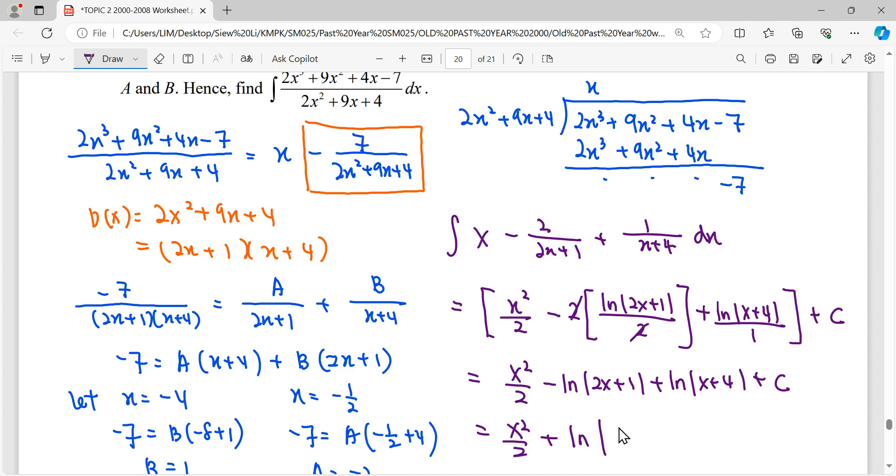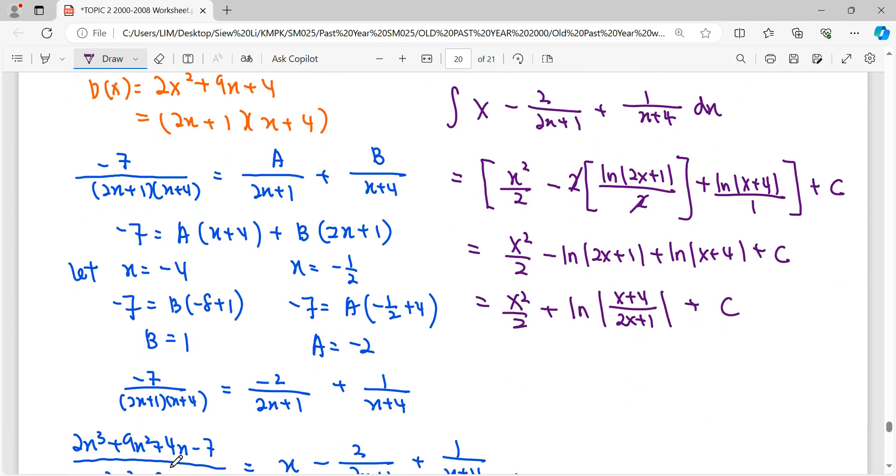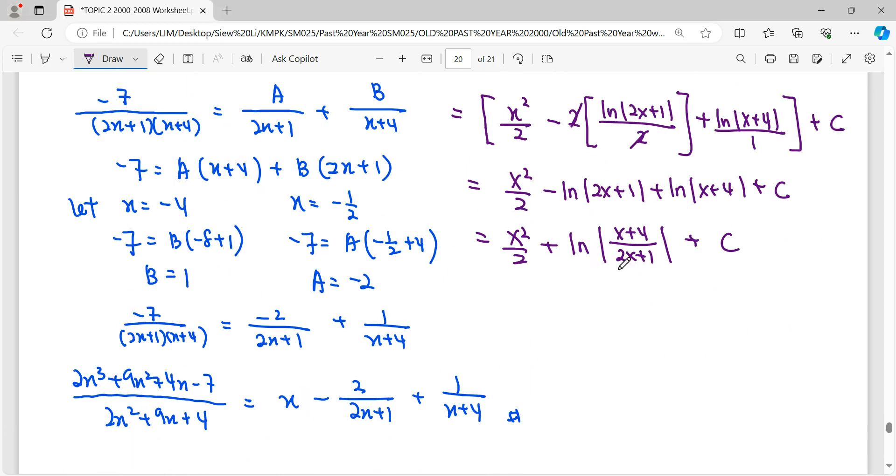It will be ln of division. x plus 4 minus, so divide by 2x plus 1 plus C. So that's all for this.